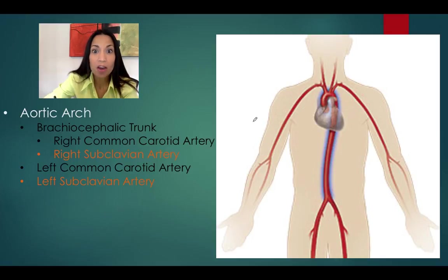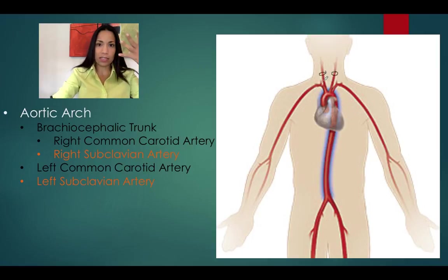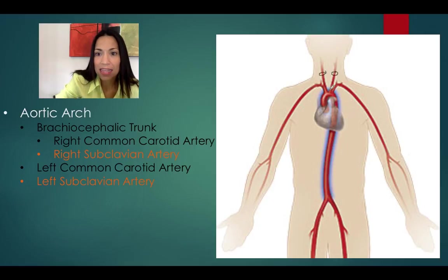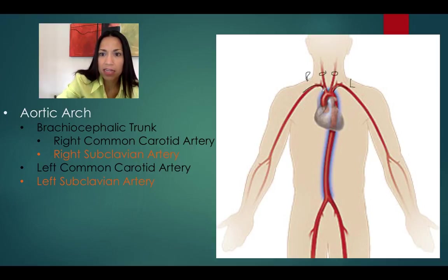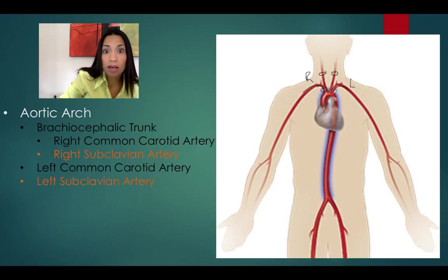Now let's describe the arteries that irrigate the upper limbs. We just described the two common carotid arteries and the branches that irrigate the neck and head. Now we're following the subclavian arteries on the right side and on the left side. On the right side, the subclavian artery is a branch of the brachiocephalic trunk, and the left subclavian artery branches off directly from the aortic arch — it's the third branch.